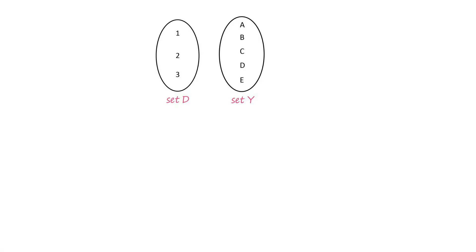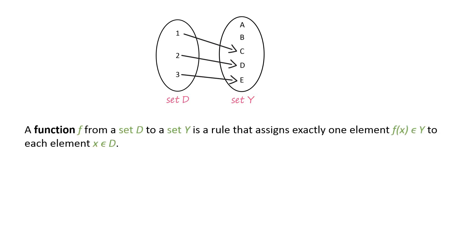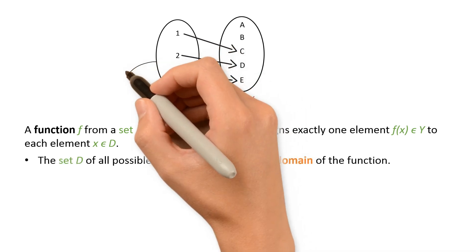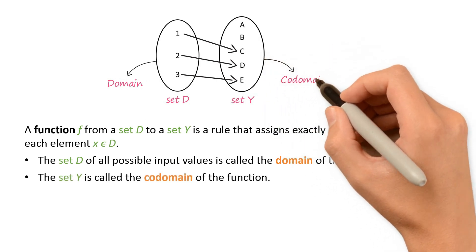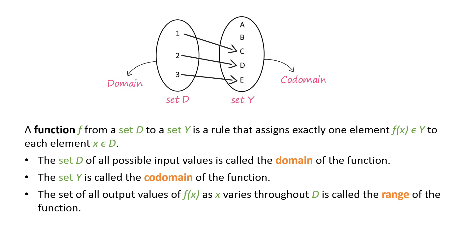Suppose we have two sets, D and Y. Every element in the set D is related to exactly one element in the set Y. Such a relation is called a function. A function f from a set D to a set Y is a rule that assigns exactly one element from the set Y to each element in the set D. The set D of all possible input values is called the domain of the function. The set Y is called the codomain of the function. The set of all output values of f of x, as x varies throughout D, is called the range of the function.